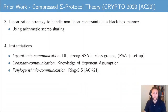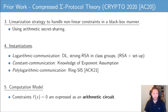Compressed sigma protocol theory has been instantiated from a variety of cryptographic hardness assumptions. To get logarithmic communication complexity it can be instantiated from the discrete log or strong RSA assumption. If instantiated from the knowledge of exponent assumption, you get even constant communication complexity. You can also instantiate it from the lattice-based ring SIS assumption to get polylogarithmic communication complexity. However, the computation model considered in compressed sigma protocol theory is the arithmetic circuit model, meaning all constraints should be expressed in terms of an arithmetic circuit C. This is precisely what we want to generalize — we want to allow the constraints f(x) = 0 to be expressible also by bilinear circuits.